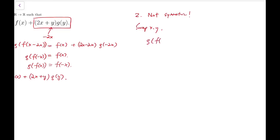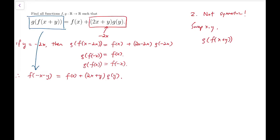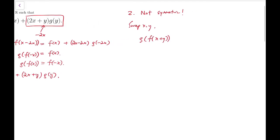Swap x and y, and I will get g(f(x+y)), which is symmetric about x and y, so it will be the same. That equals f(y) + (2y+x)g(x). Because the left-hand side is symmetric while the right-hand side is not, I can say that f(x) + (2x+y)g(y) = f(y) + (2y+x)g(x).